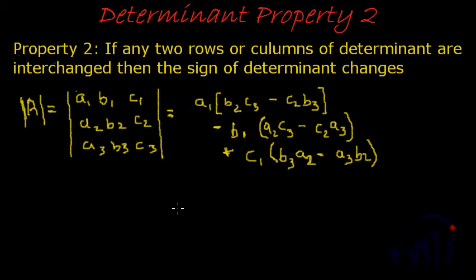Property number two states that if any two rows or columns of a determinant are interchanged, then the sign of determinant changes. That is, the value of the determinant becomes negative if it was positive, and becomes positive if it was originally negative. So let us check this.